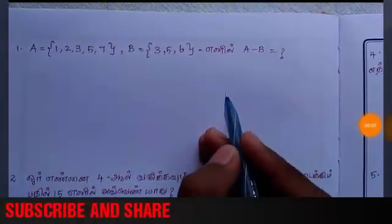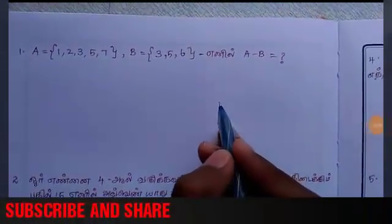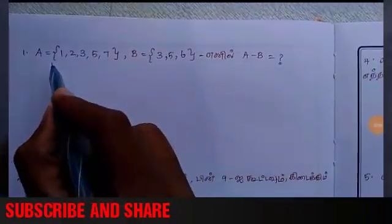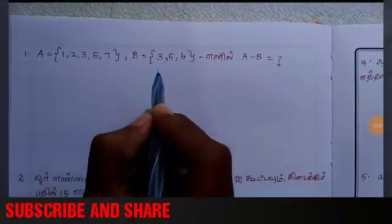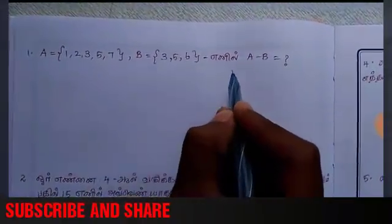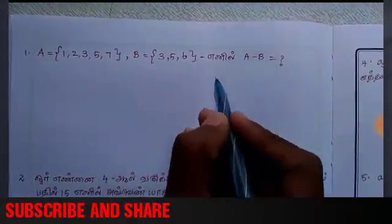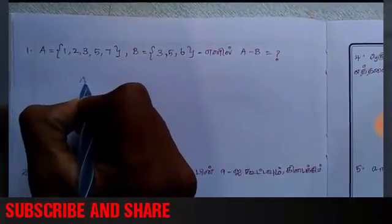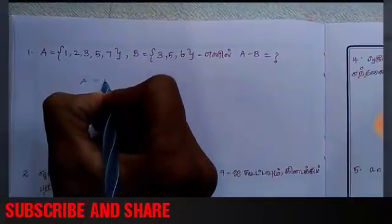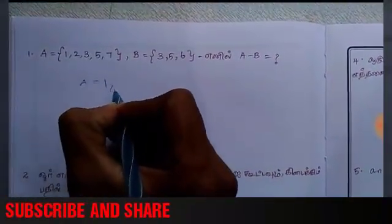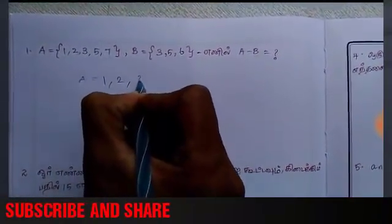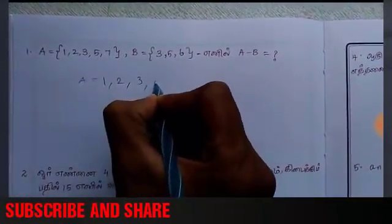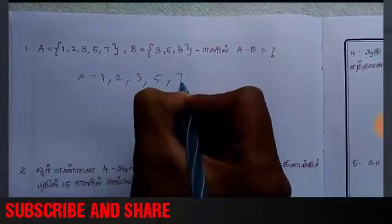If you look at the A, B options, I'll show you A-B options. 1, 2, 3, 5, 7.